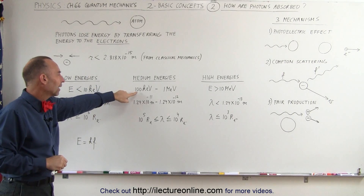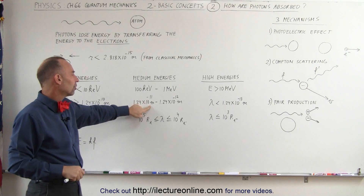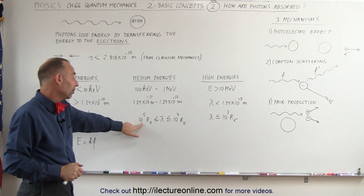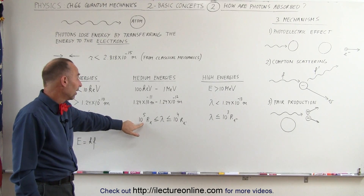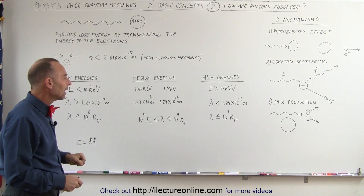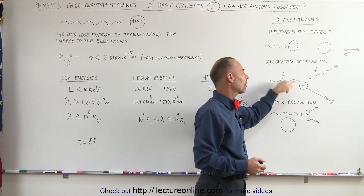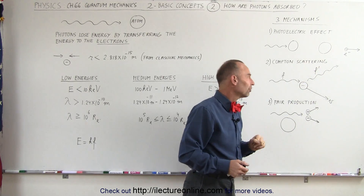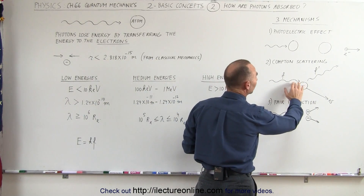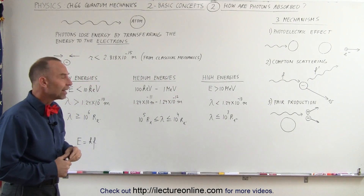At medium energies — 100,000 to 1 million electron volts — the wavelength shortens to about 1×10⁻¹¹ to 1×10⁻¹² meters, approximating the electron's size more closely, but still 100,000 to 10,000 times larger than the classical electron radius. In this regime, instead of being fully absorbed, the photon ricochets off the electron: the electron goes flying in one direction, the photon in another, with both momentum and energy conserved. The energy of the photon is decreased by the amount given to the electron — this is the Compton scattering event.